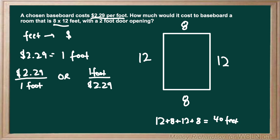But it says that we have a 2 foot door opening, so that means there's going to be 2 feet less of baseboards. We're going to have to take our 40 feet and subtract 2 feet, giving us total dimensions of 38 feet.